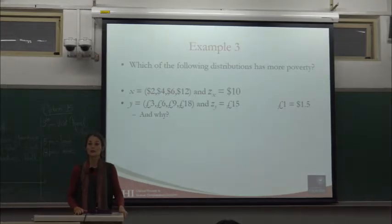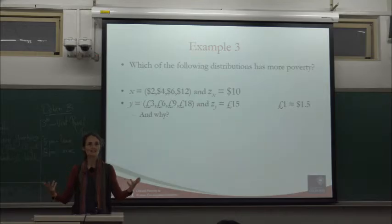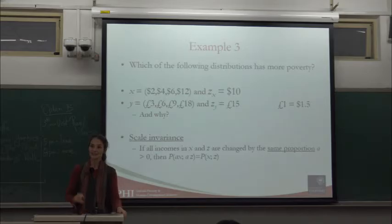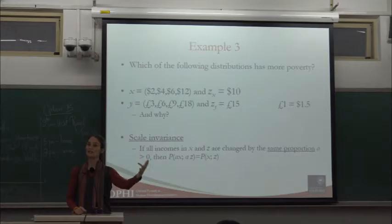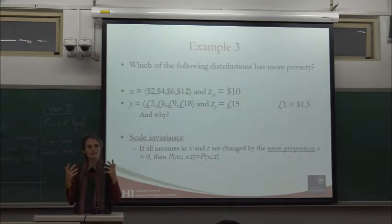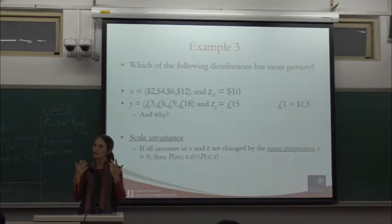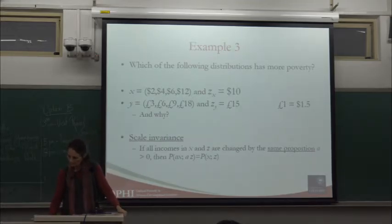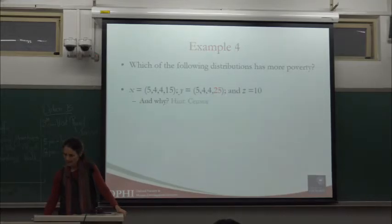If everybody is poor in both vectors but in one a person is slightly less poor — an increment in their achievements — which has less poverty? The second one. That's monotonicity again — what the head count ratio couldn't distinguish, because by the head count ratio it's 100% poverty in both.